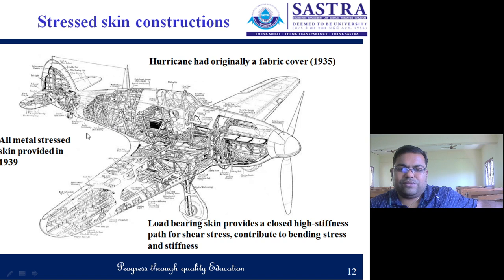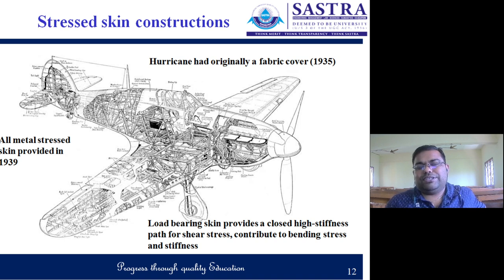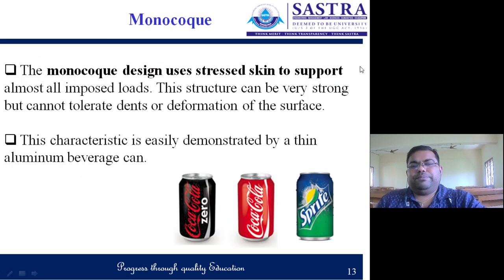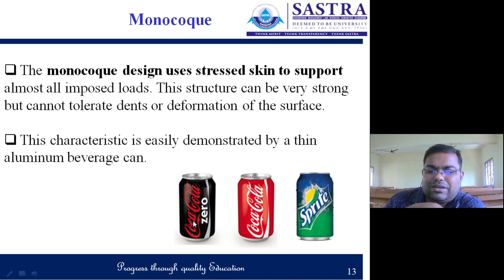The load-bearing skin provides a closed, high-stiffness structure contributing to bending stress and stiffness. Due to highly bending stresses, material selection was a big challenge — using high-strength steel or aluminum alloys increases carbon percentage and causes a weight penalty. To visualize the monocoque structure, think of a Coca-Cola can: only the outer skin supports all the weight, and internal and external pressure is borne by that skin alone.